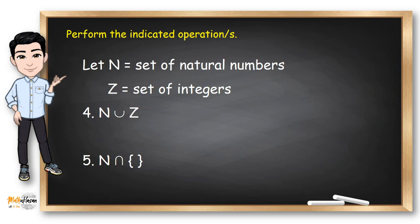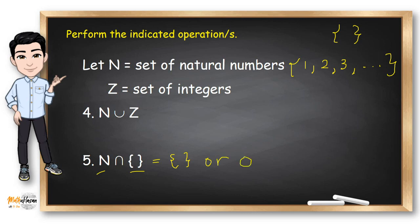How about number 5? The set of natural numbers and the empty set — is there any intersection? Well, the natural numbers are just counting numbers, and we need the common elements between the empty set and the natural numbers. There are none. So the intersection of these two sets is just an empty set.